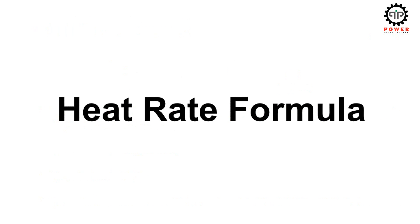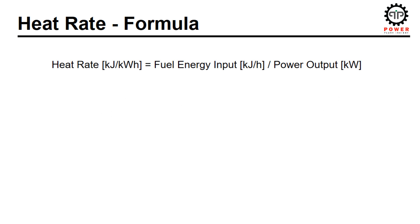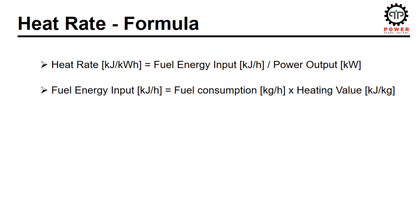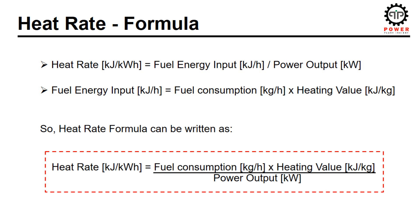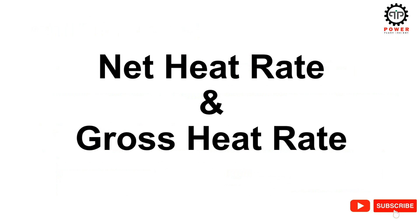Heat rate formula: from the discussion so far, we can write the heat rate formula as the ratio of fuel energy input to electrical energy output. The value of fuel energy input is obtained from the product of fuel consumption in tons per hour or kilograms per hour with its heating value in kJ/kg or BTU per pound. Use of lower heating value or higher heating value in heat rate calculation depends upon what is agreed in the power purchase agreement. So the final heat rate formula is the ratio of fuel consumption multiplied by its heating value, divided by the power output.